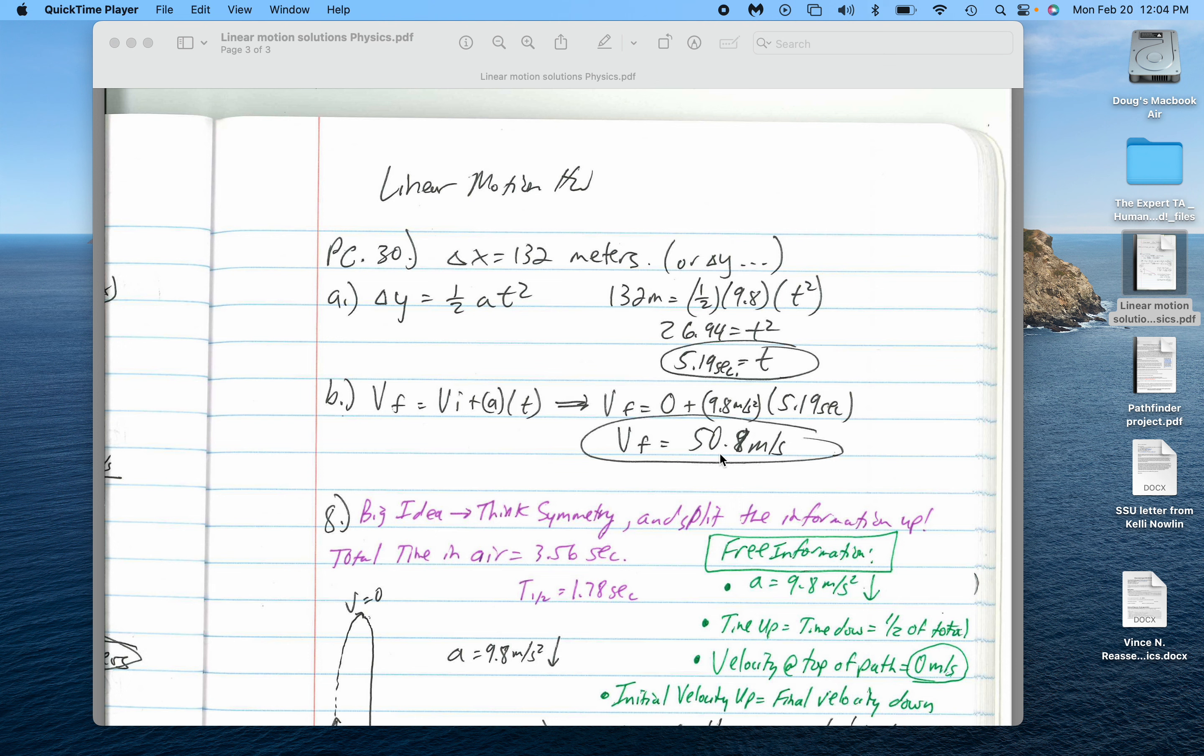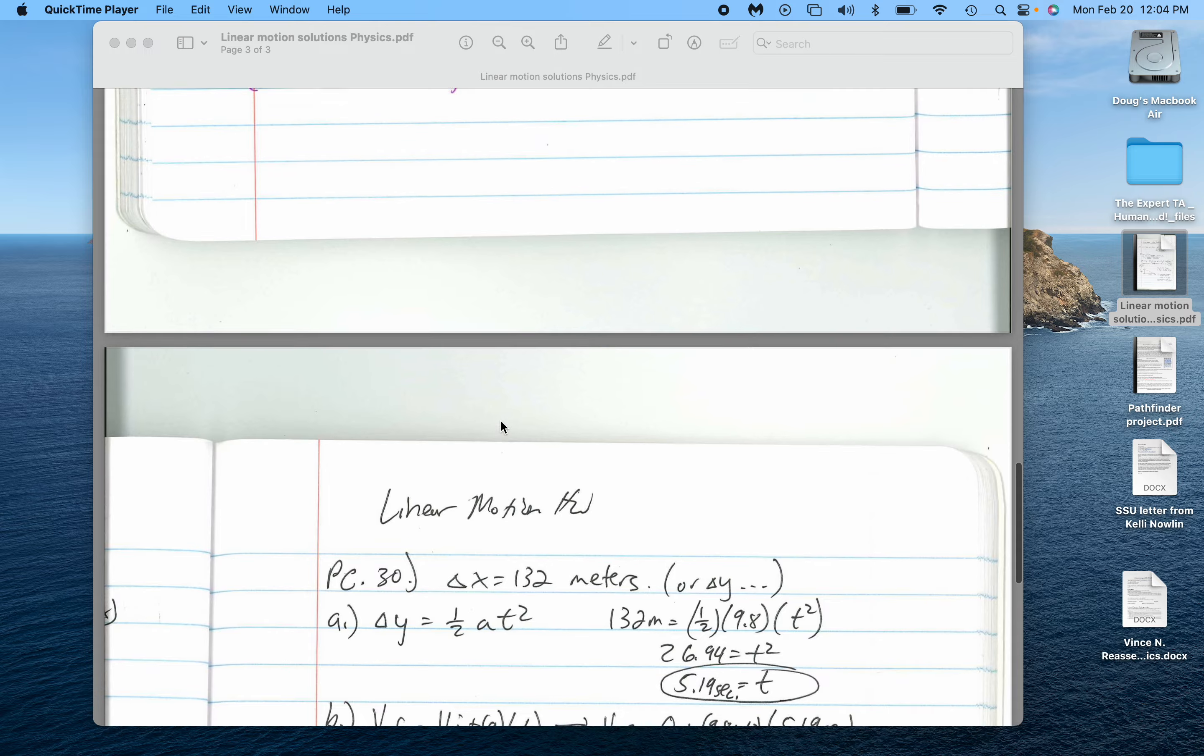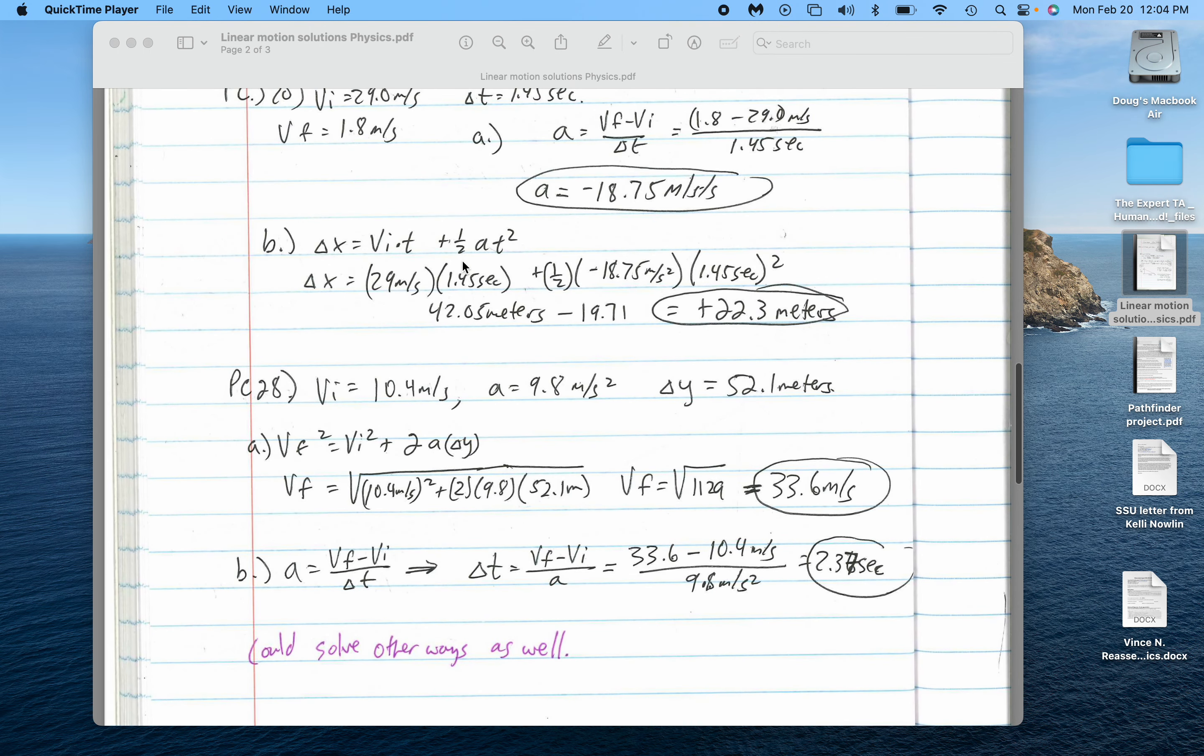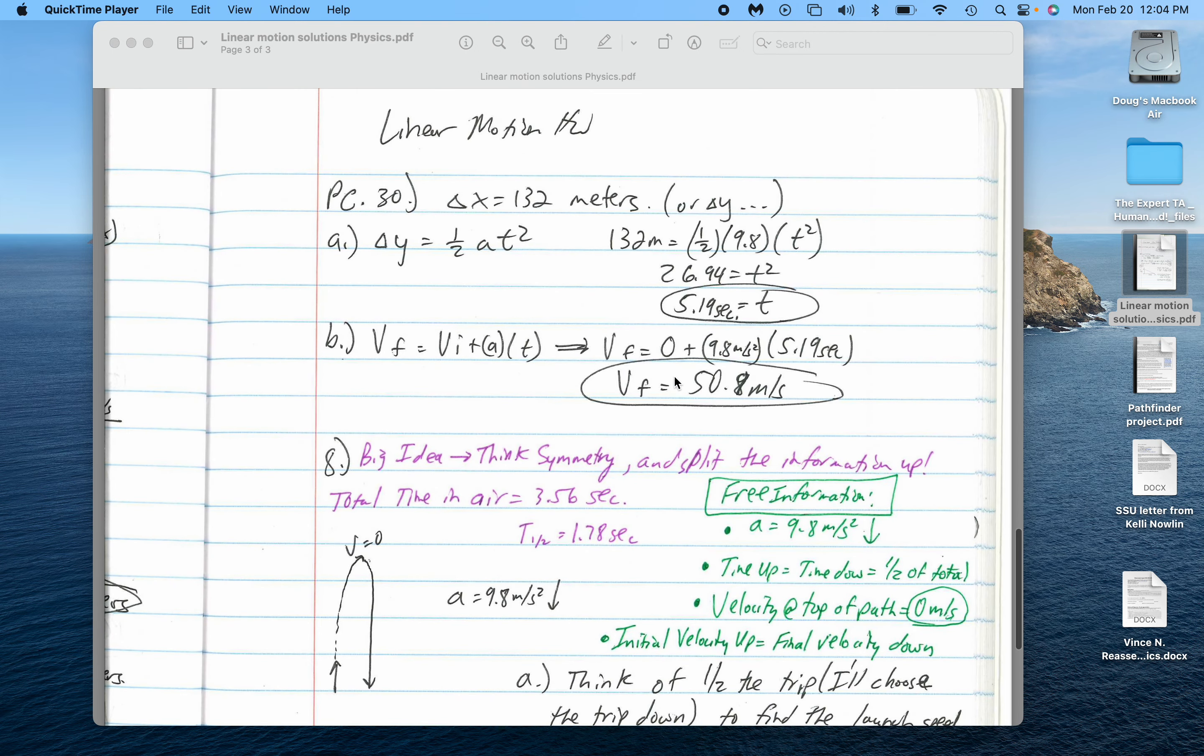To find out the final velocity, that's simply acceleration times time. That's a rearrangement of one of our formulas. I think that's formula 3, actually. So this one up here, formula 4, and this one here, formula 5. We get around 50.8, 50.9 meters per second.